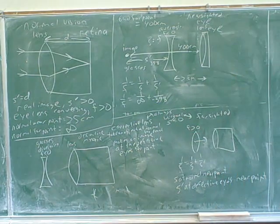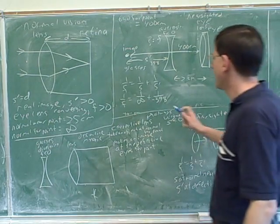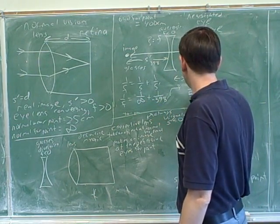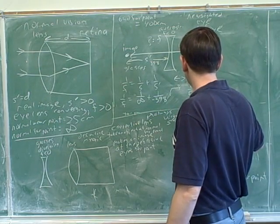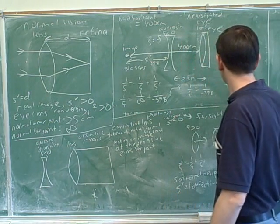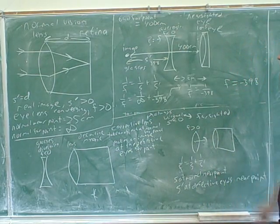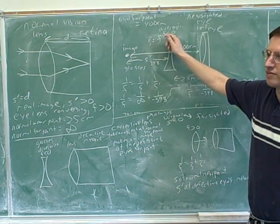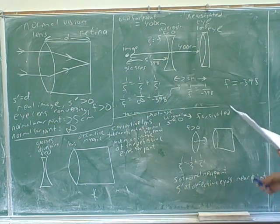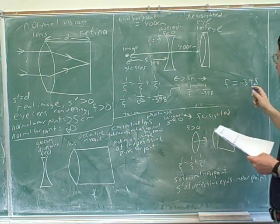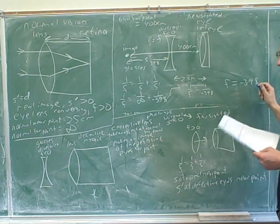Now what? Well, 1/S is 1 over infinity, which is 0. So what did we get for F? Negative 398. Did we expect it to come out negative? Yes. Because we said we needed diverging. If it hadn't come out negative, we would have known we made a mistake. So what type of lens do we need? A lens with a focal point of negative 398. What are the units on that? Centimeters.